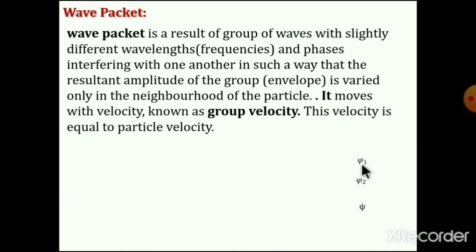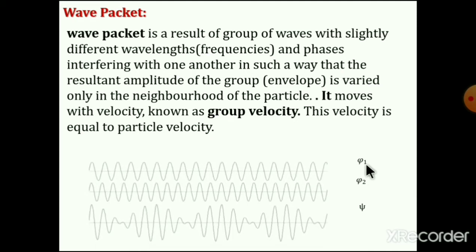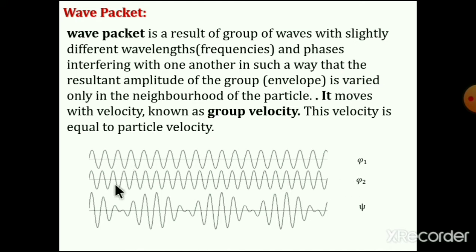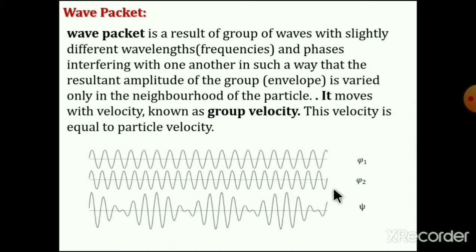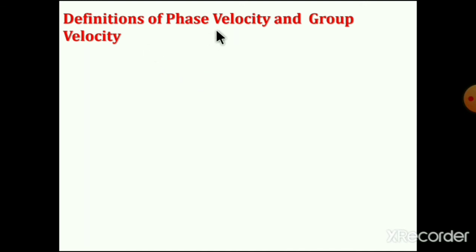Now, how do we construct the wave packet? For that purpose, we consider two waves whose angular frequency and propagation constant are slightly different. These two waves are represented here. When these two waves superimpose, we get a resulting wave packet. That wave packet moves with a velocity called group velocity, which is exactly the same as the particle velocity. The two waves ψ₁ have angular frequency ω and propagation constant k. The other has slightly different values: ω + δω and k + δk.